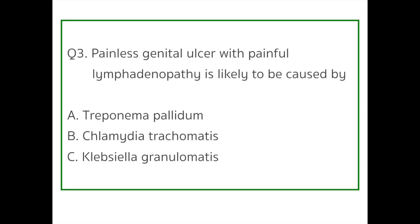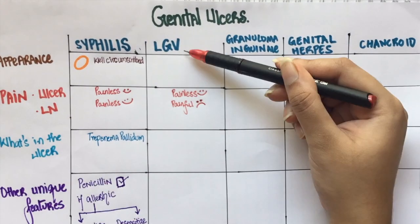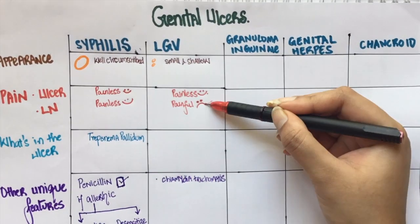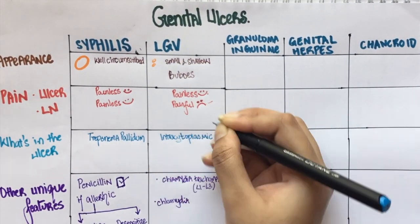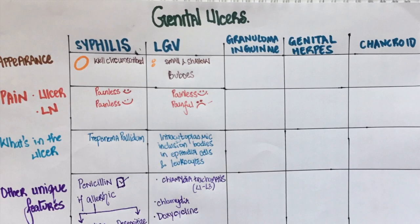Question number three: Painless genital ulcer with painful lymphadenopathy is likely to be caused by — Option A: Treponema pallidum, Option B: Chlamydia trachomatis, Option C: Klebsiella granulomatis. The answer is Chlamydia trachomatis. Painless ulcer along with painful lymphadenopathy is seen in lymphogranuloma venereum, caused by Chlamydia trachomatis. The ulcer is shallow, and the painless ulcer can progress to painful lymphadenopathy. The lymph nodes can come together to form buboes. Inclusion bodies within the cytoplasm can be seen in this lesion. Lymphogranuloma venereum is treated with doxycycline.